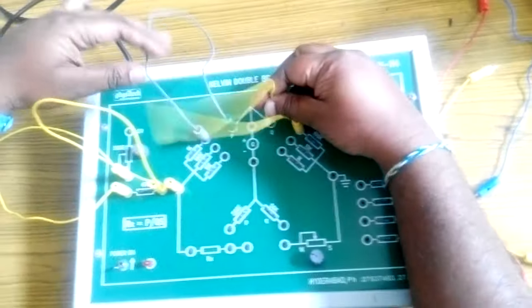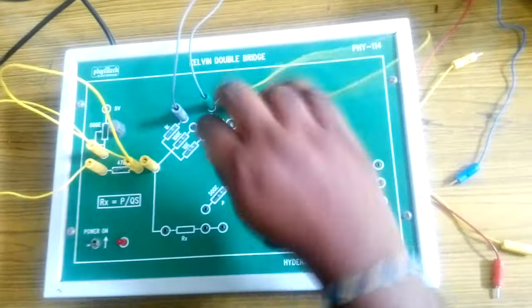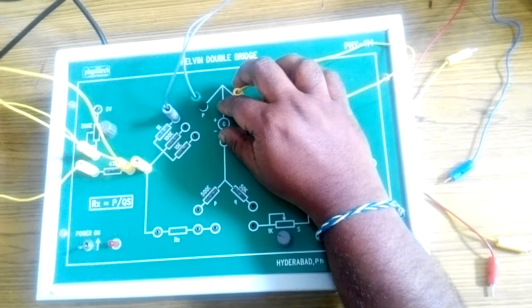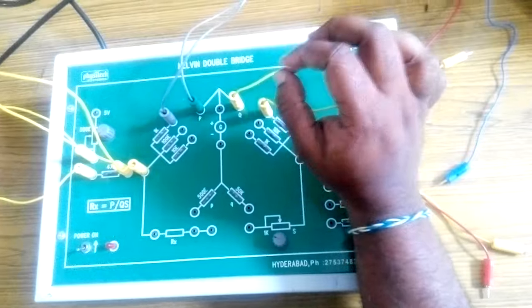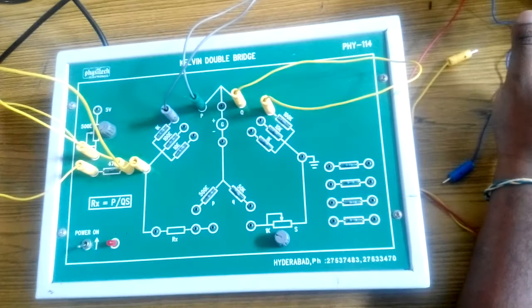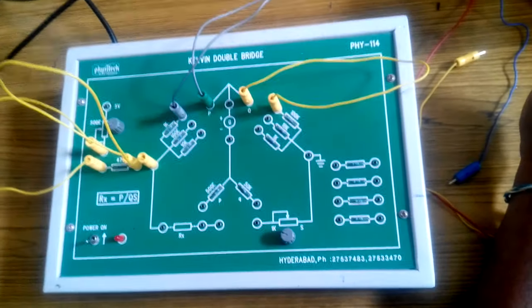The output of the Kelvin's double bridge circuit is a small current, usually measured with the help of an ammeter. The range of the ammeter is 0 to 20 micro amps or 0 to 200 micro amps.